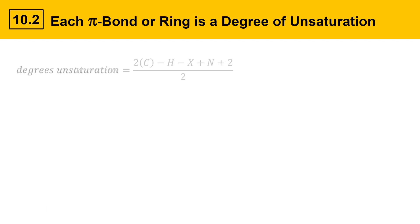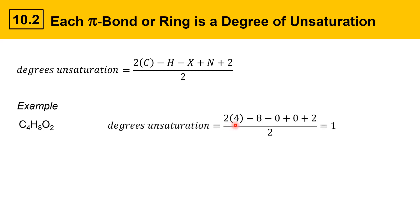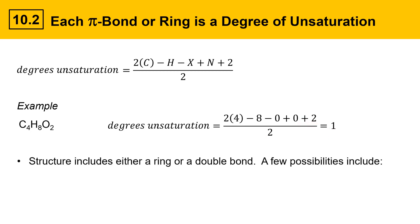Let's go through another example. If you're given the formula C4H8O2, how many degrees of unsaturation does it have? Plugging into the equation: two times four, minus eight, minus zero halogens, plus zero nitrogens, plus two, all divided by two — equals one. That means this molecule contains either a ring or a double bond, which could be useful information if you're trying to solve the structure of an unknown compound. At least you would know to look for either a double bond or a ring.